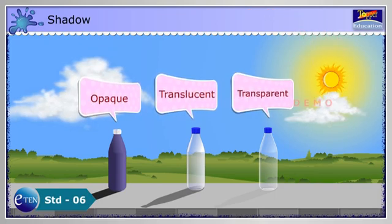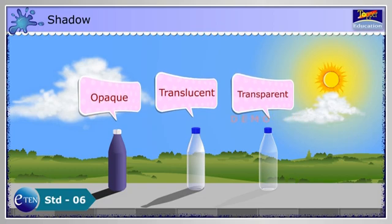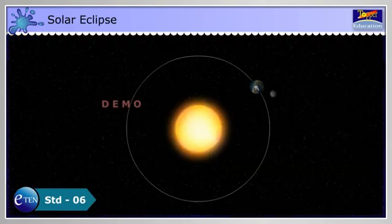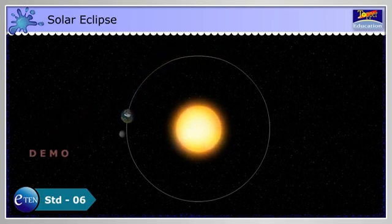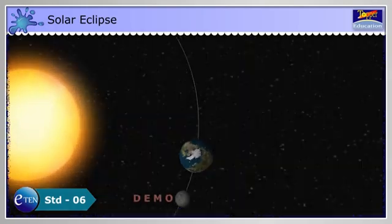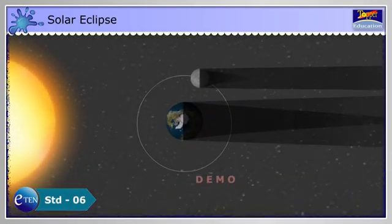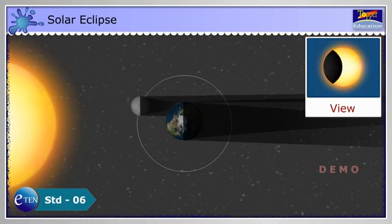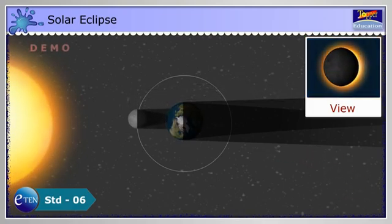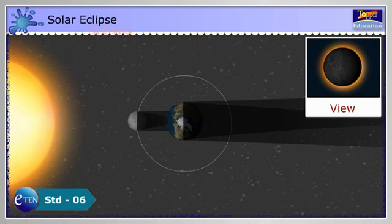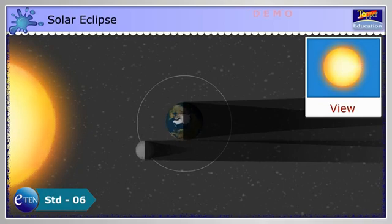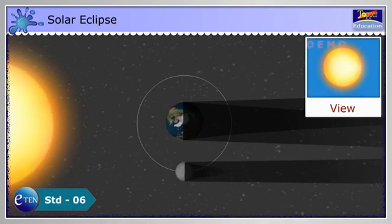An eclipse of the sun or solar eclipse can only occur during new moon when the moon passes between earth and sun. If the moon's shadow happens to fall upon earth's surface at that time, we see some portion of the sun's disk covered or eclipsed by the moon.